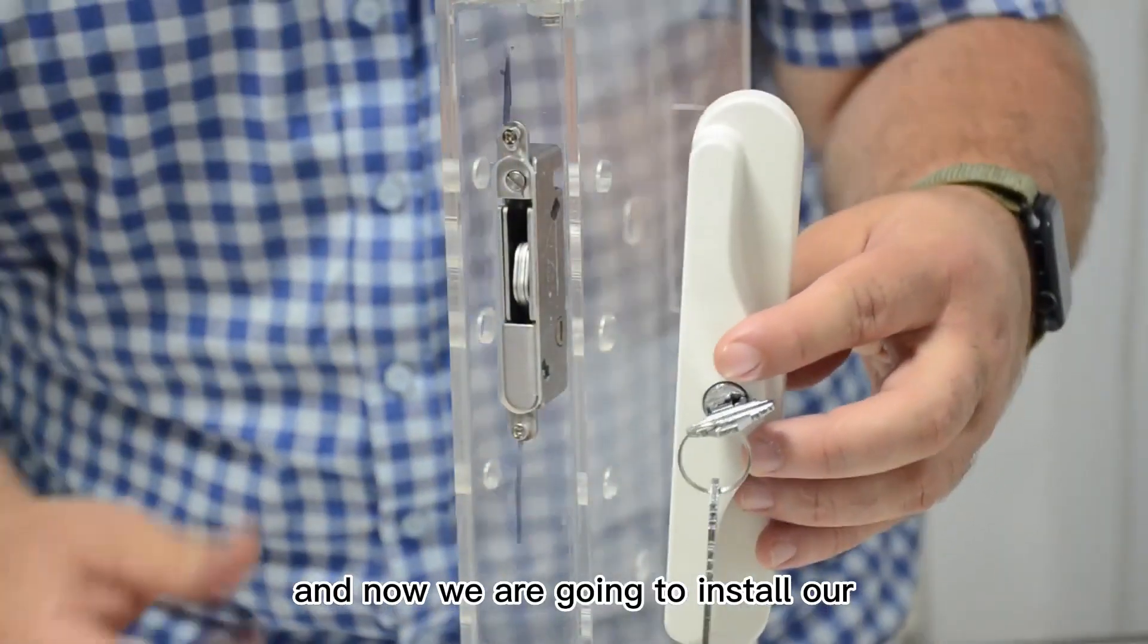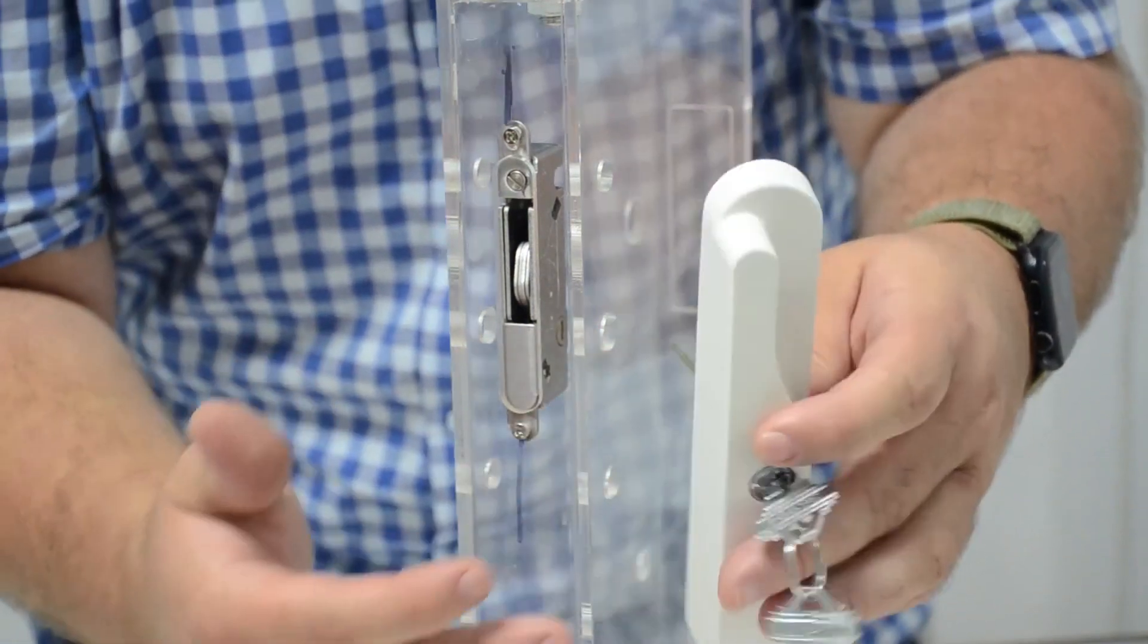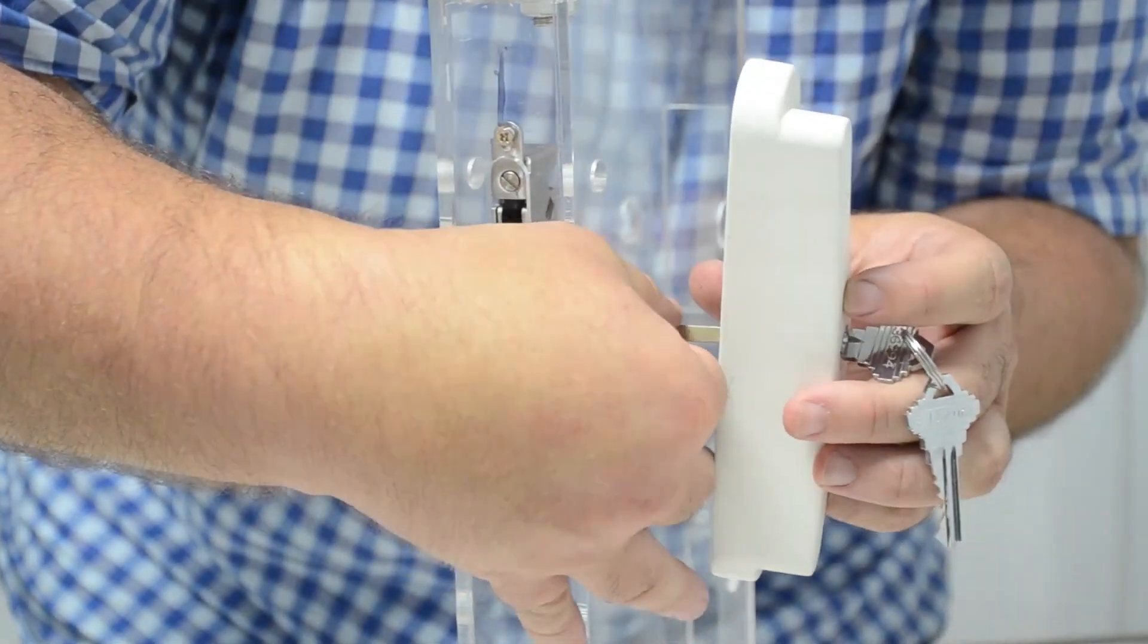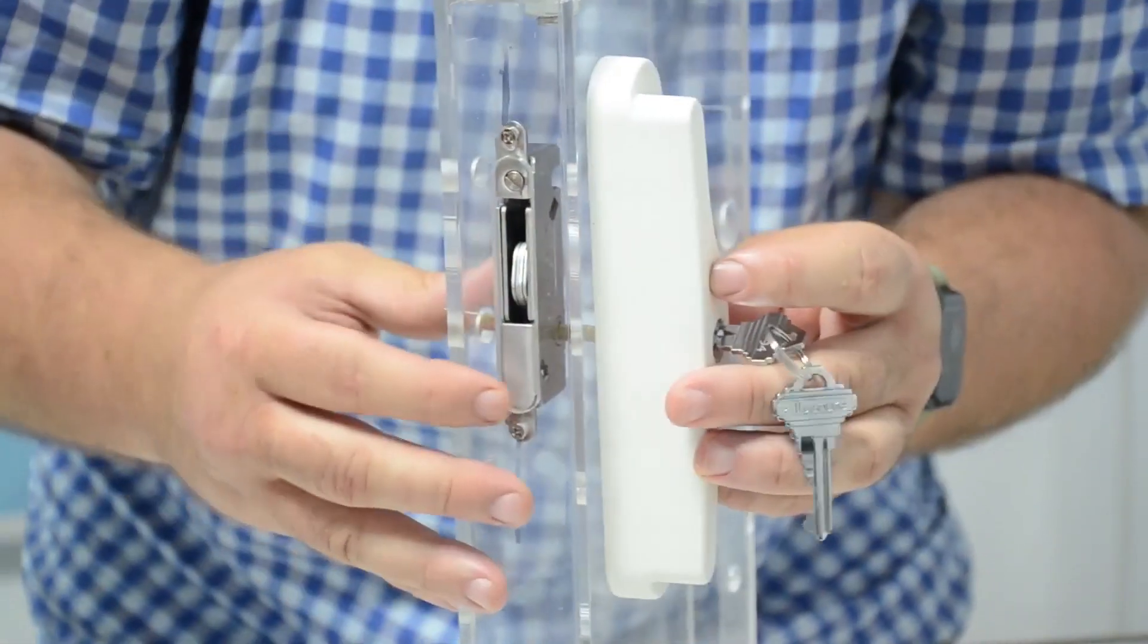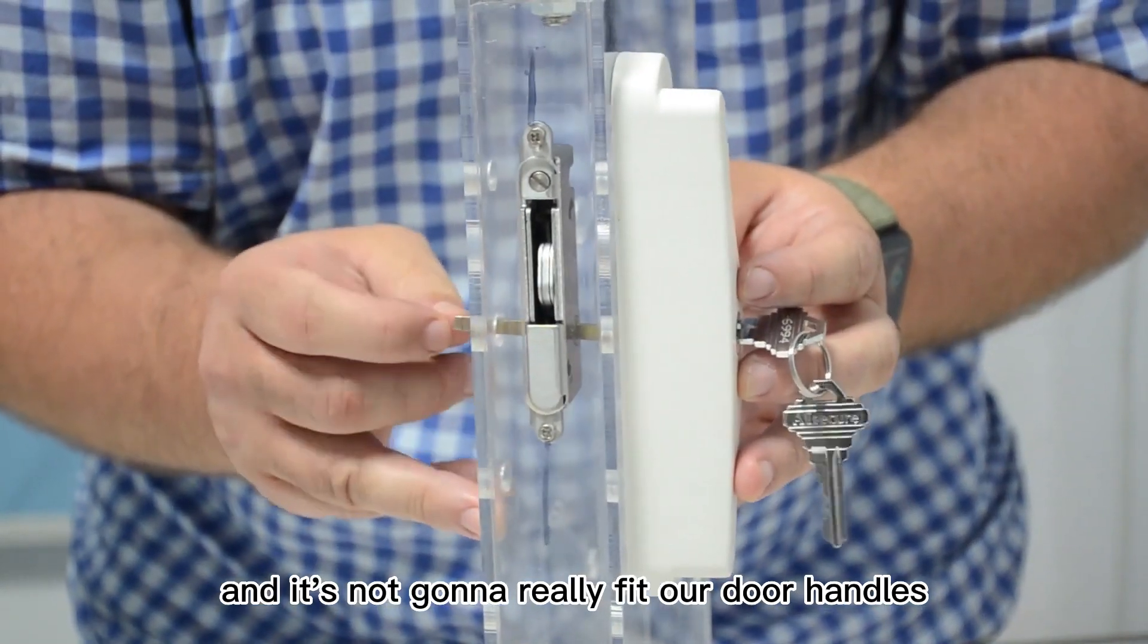Now we are going to install our door handle with the key. This one is the white, so let's go ahead and input it into the hole. But as you can see, it is a bit long here and it's not going to really fit our door handles.